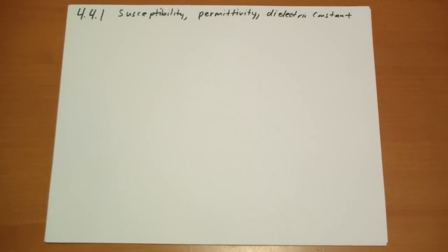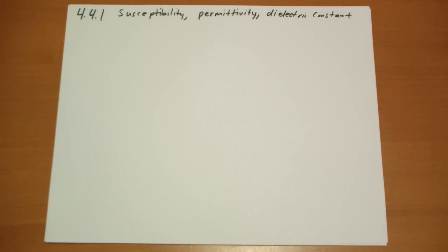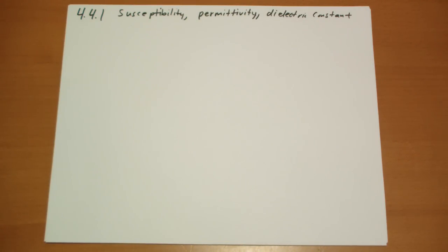Hi, this is Jonathan Gardner. We're covering section 4.4.1 of Griffiths' Introduction to Electrodynamics, second edition. If I go too fast, you can always rewind. If you like what I'm doing, be sure to like and share. If you have any questions, you can do a video response in the comments below. I'm going to go quick on this — there's a lot to cover.